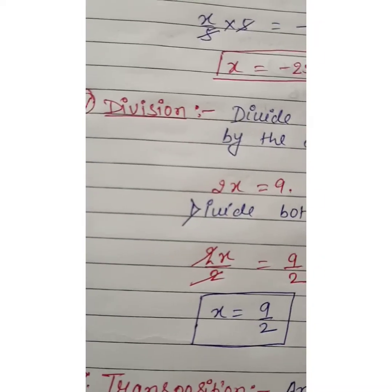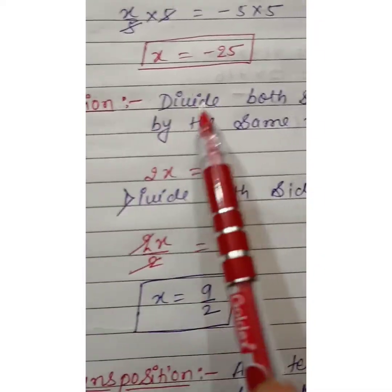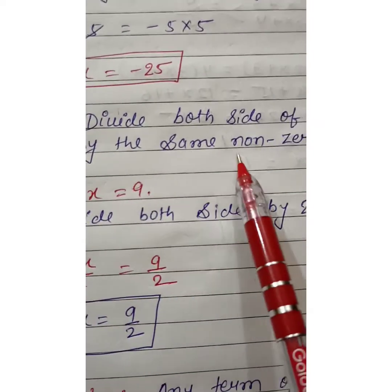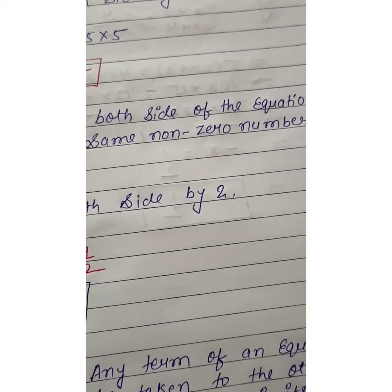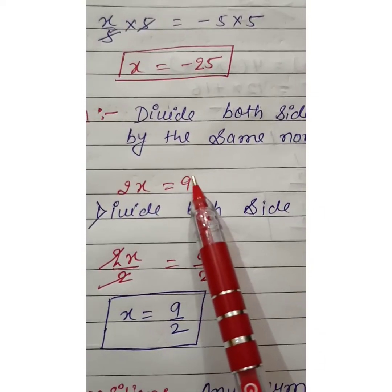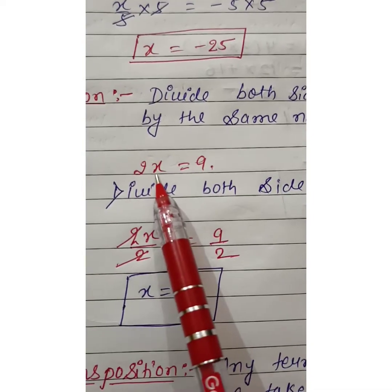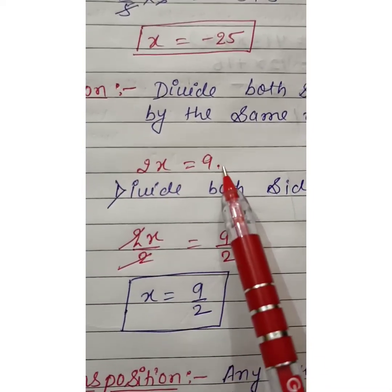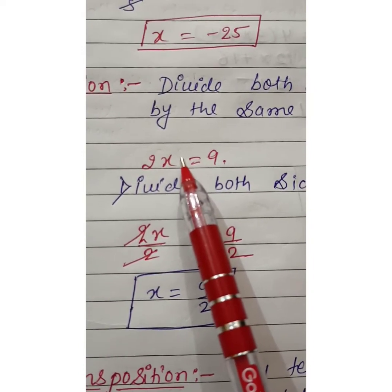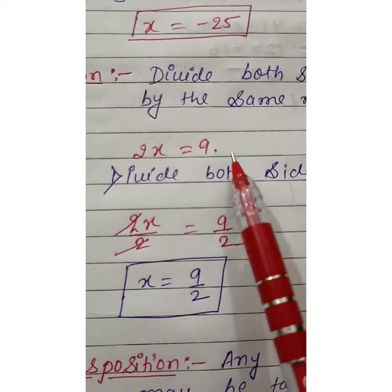Next condition is division. Divide both sides of the equation by the same non-zero number. Here is our equation 2x equals 9. The 2 is in multiplication form with variable x, 2 into x equals 9.